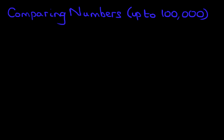Hello, and welcome to the tutorial on comparing numbers. In this tutorial, we're going to compare numbers up to 100,000. The first thing we're going to do is write the symbols for which is smaller and which is larger. This symbol means smaller than, this one is equals to, and that is larger than. Just remember, the arrow points to the smaller number.